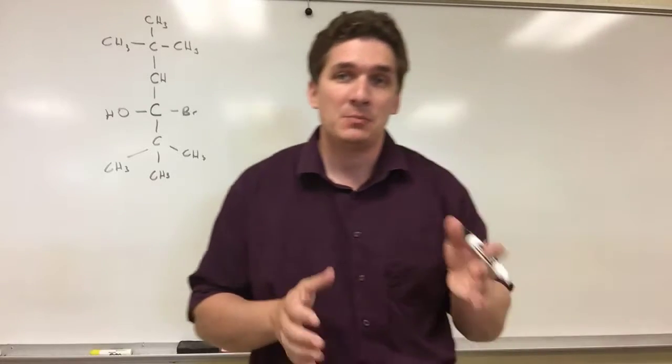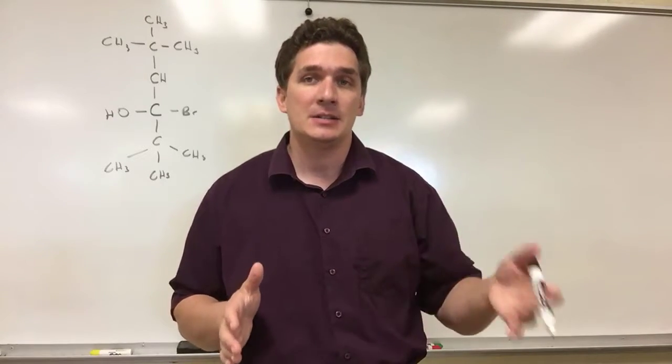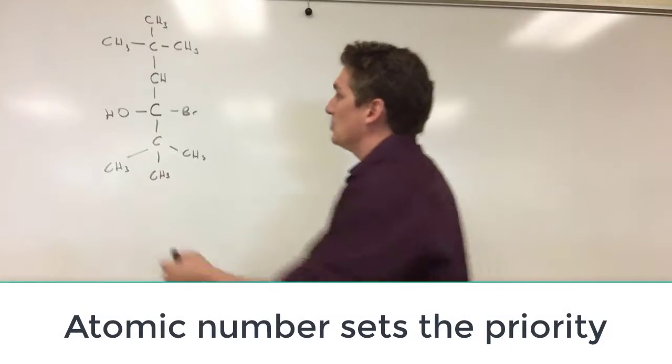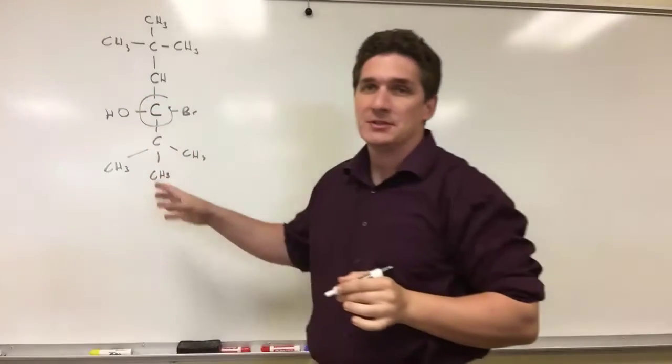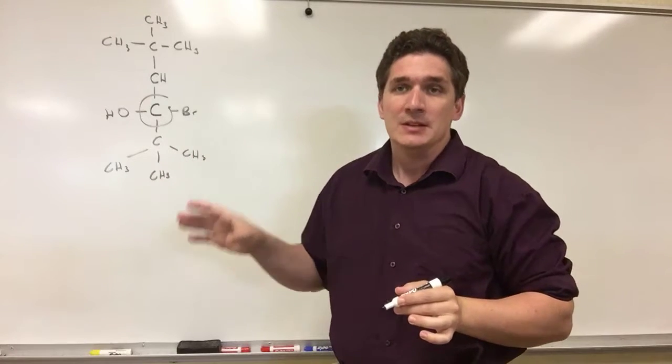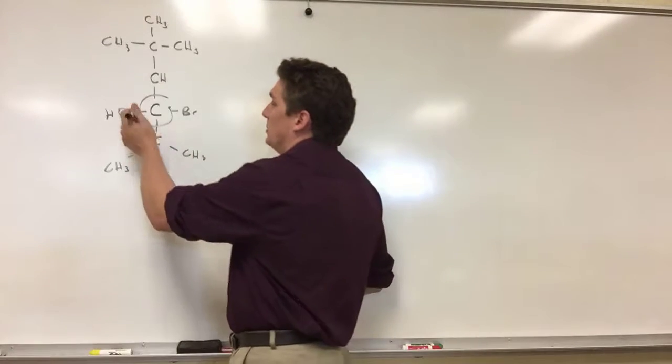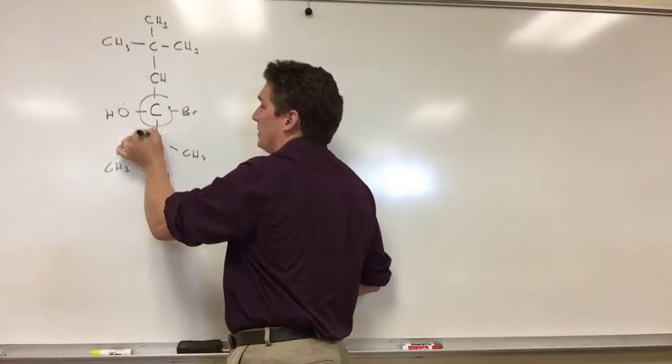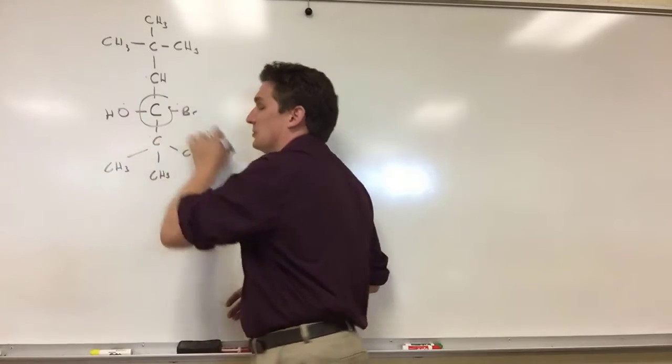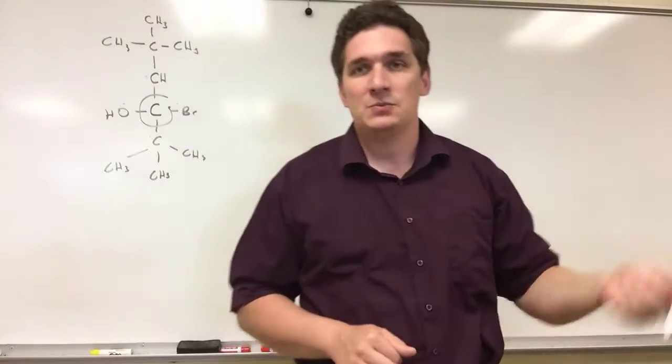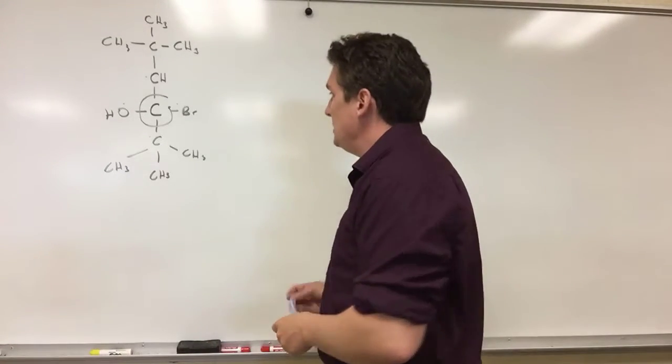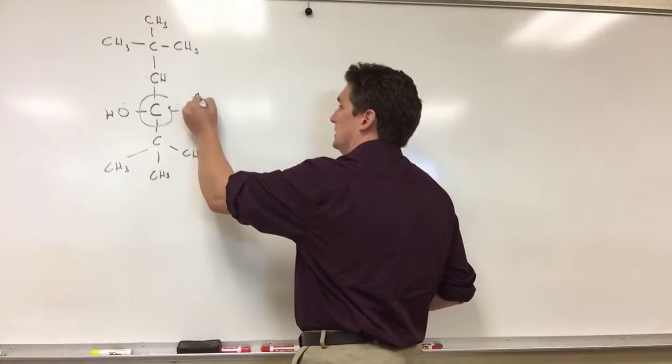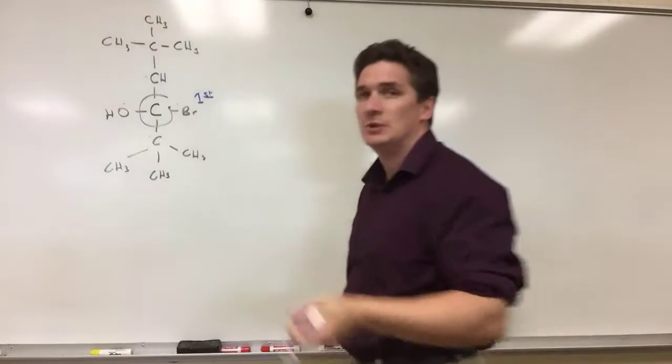So the way we're going to do this primarily is looking at the higher atomic numbers. Right now, for this example, we're going to focus on this carbon and we want to rank these four groups around this carbon in terms of their priority. First thing we're going to do is we're going to look one atom out. So we have four atoms: carbon, carbon, oxygen, bromine. The one that ranks number one is the one that has the highest atomic number, in this case bromine. So bromine here is our highest group, it's number one.